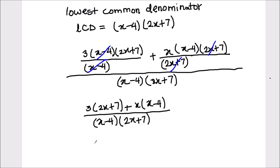Now we just need to multiply and expand. So 3 times 2x equals 6x, plus 3 times 7 is 21, plus x times x is x squared, and x times minus 4 is minus 4x.